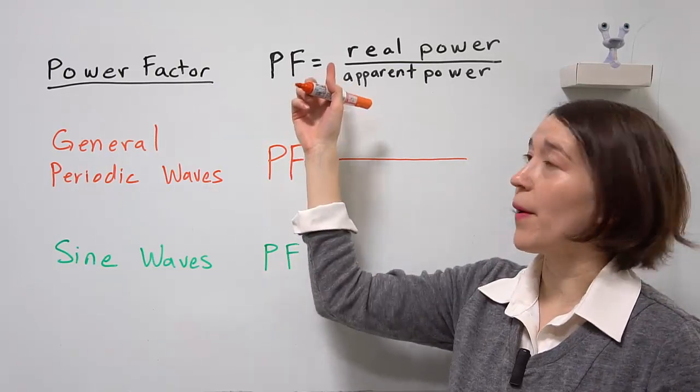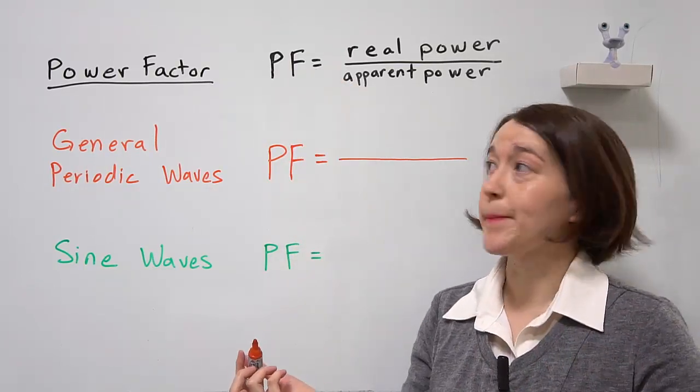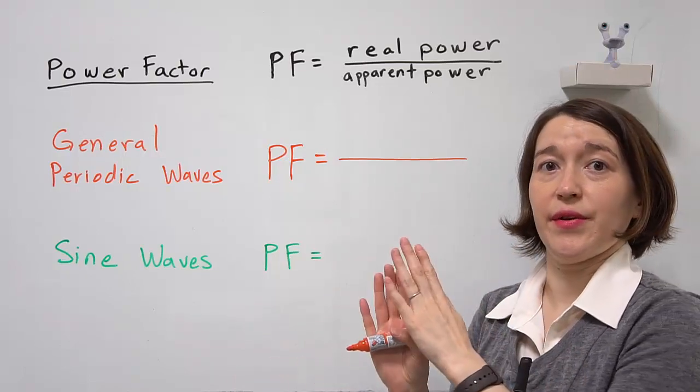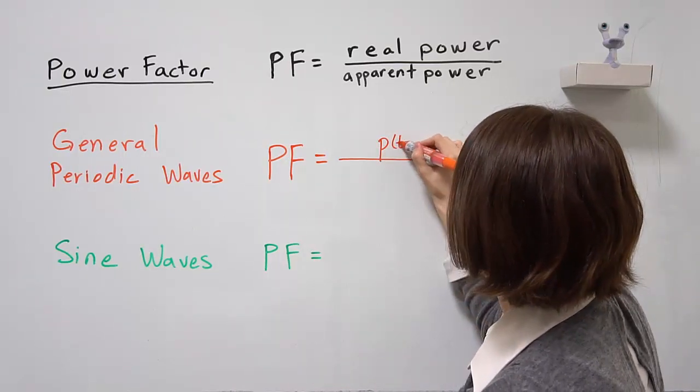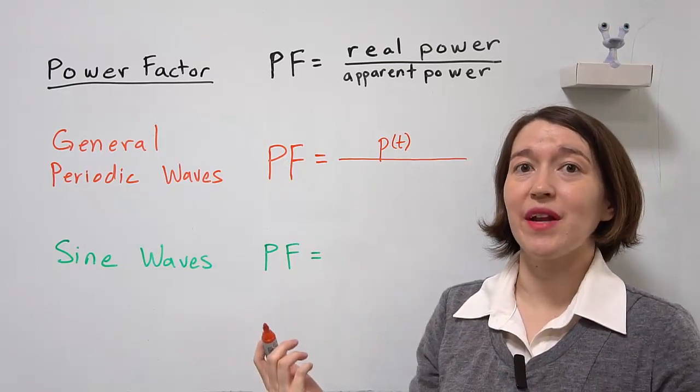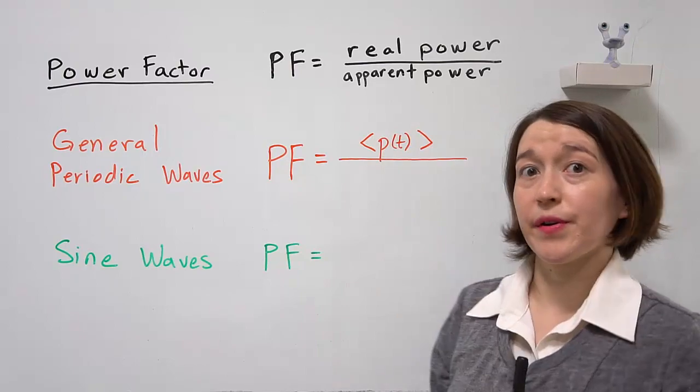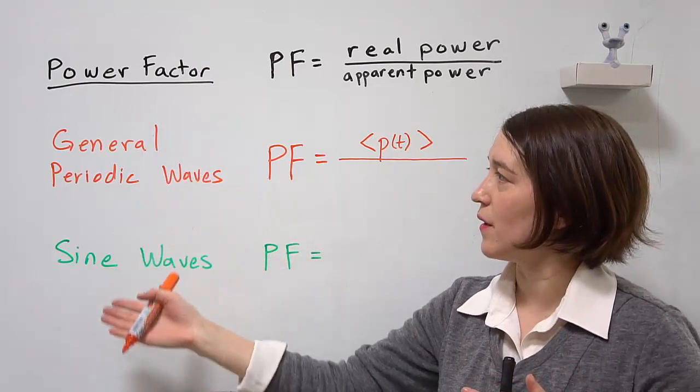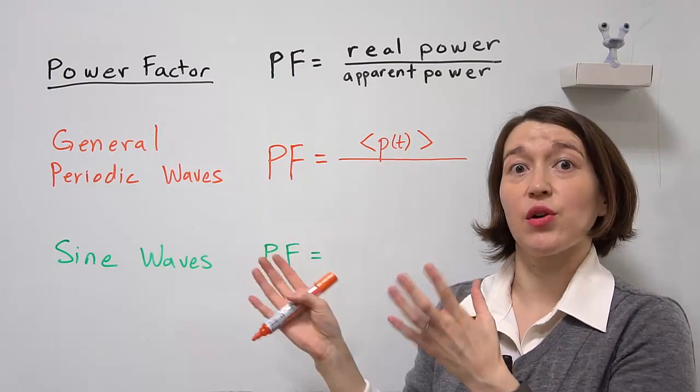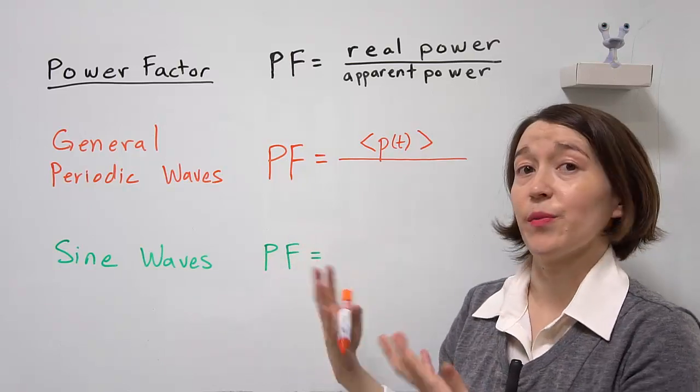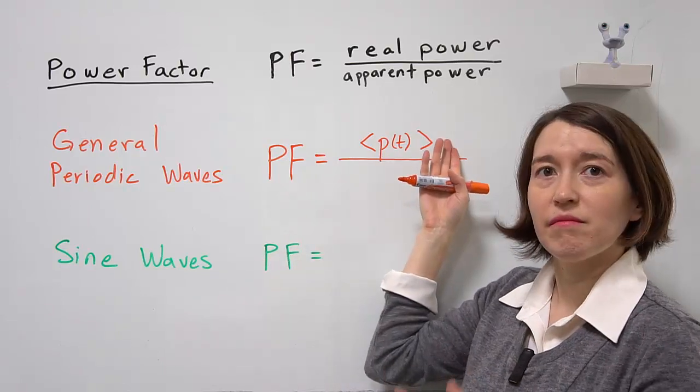So first we'll start with the real power. The real power is the same as the average power, so you would take your P of T, your power in the time domain, and you take an average of that over your period. So for non-sinusoidal waveforms, you have to actually go through and calculate that over a period.